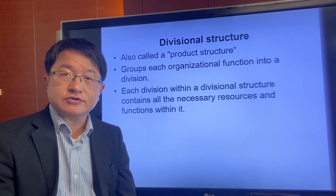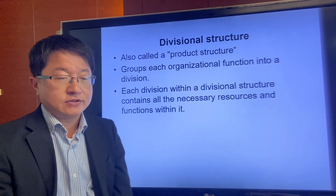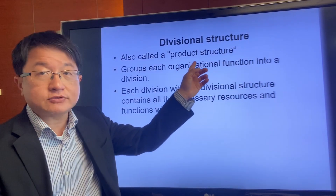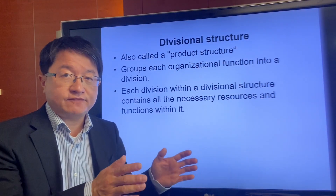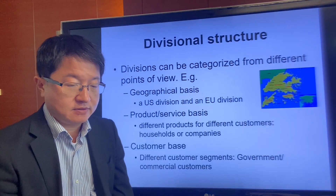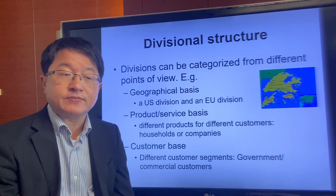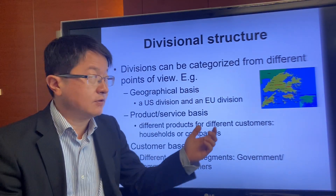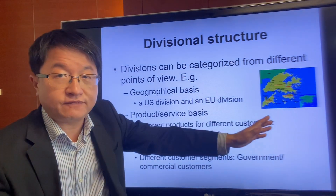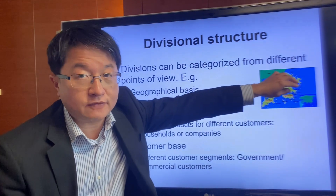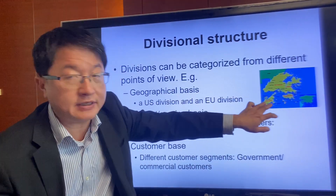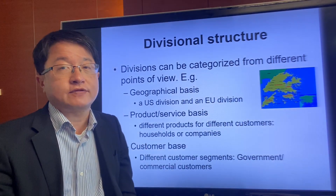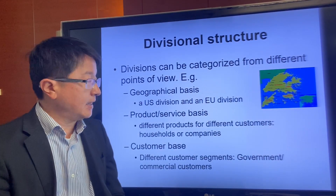Another structure is the divisional structure, where we divide the company into different divisions. Sometimes this is called a product structure, dividing the company by different products or services. Division structures can also be divided by geographic location. For example, a power or service company might divide Hong Kong into different regions — Northwest, Northeast, Southeast, Southwest, Hong Kong Island, Lantau Island — so each division looks after a particular cluster.